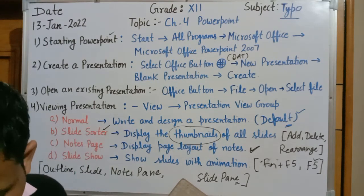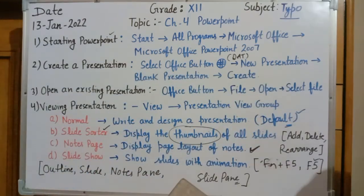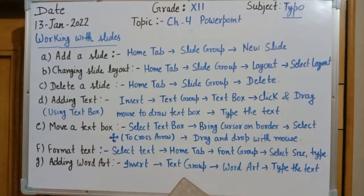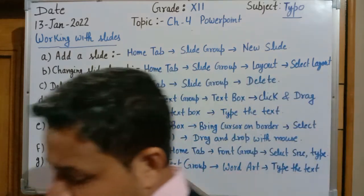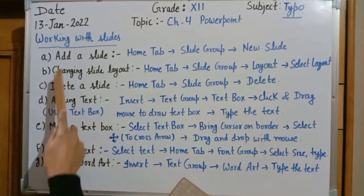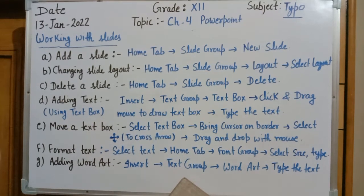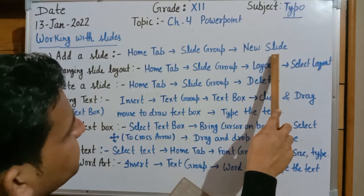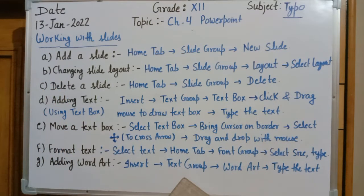After covering different types of views, we move to working with slides. To add a slide, follow three steps: first select the Home tab, then in Home tab select the Slide group option, and in Slide group select New Slide. A default slide will be inserted in your document, which is known as the Title Slide.